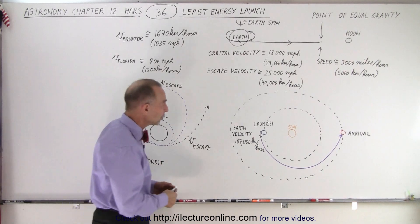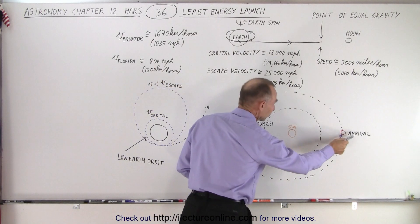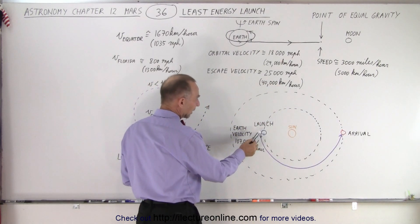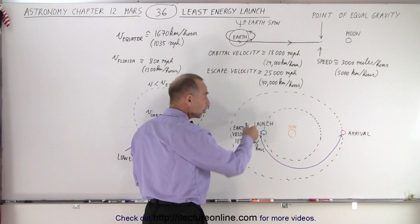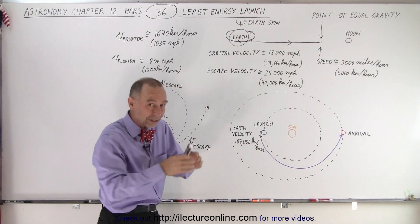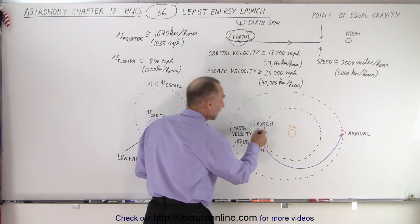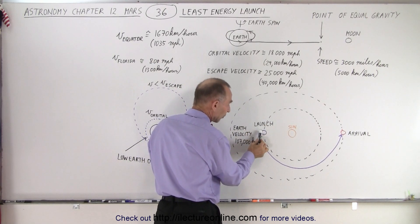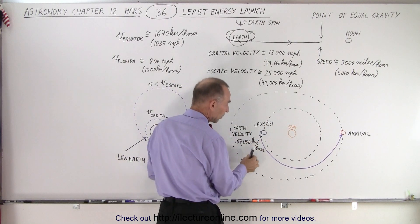The same thing happens when you want to go from the earth to Mars. Here's the sun. What you want to do is launch off from the earth in the same direction of the earth's spin to gain some energy there. Then you go into lower orbit. At that point, when you're in the right direction at the right point in the orbit, you want to turn on the rocket engines and gain some additional speed.